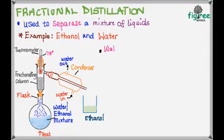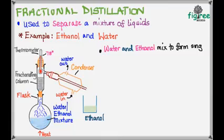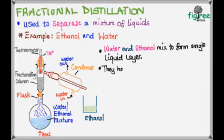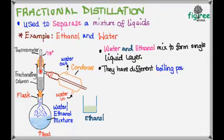Here we condense the steam that vapored from the solution. So what happens? Let me now explain. Water and ethanol mix to form a single liquid layer. Like I said before, so I've written it down. They are completely miscible. They have different boiling points.